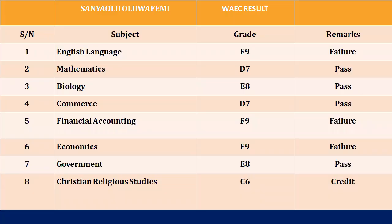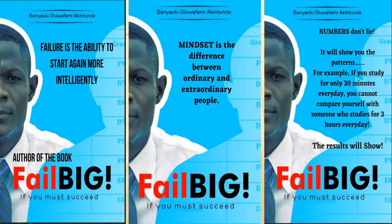Like I always tell you, you need to practice enough questions. Numbers don't lie — they only show results. The results will expose those who have done the hard work behind the scenes. I got F9 in financial accounting, and you can draw inspiration from that. Remember: failure is the ability to start again more intelligently. When you fail, you are not starting from scratch — you are starting from experience. Your mindset is the difference between ordinary and extraordinary people.